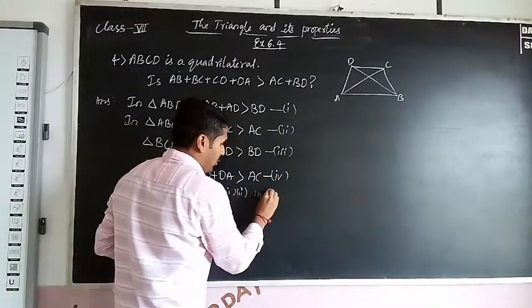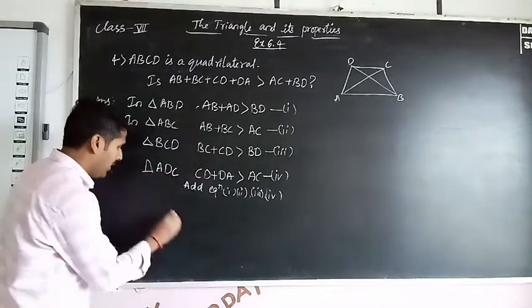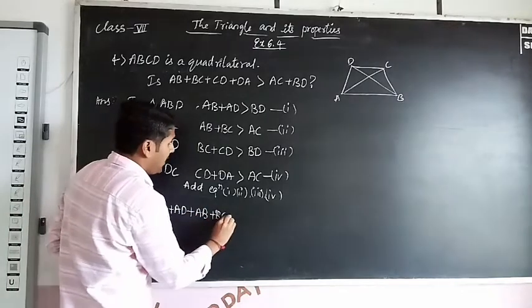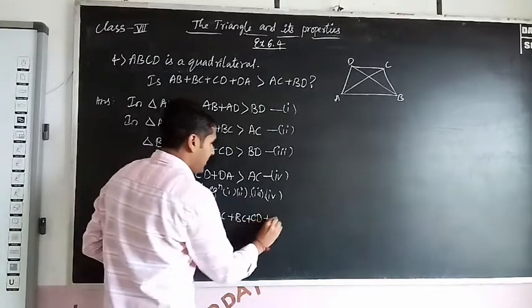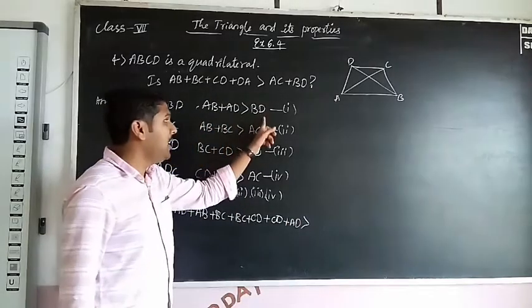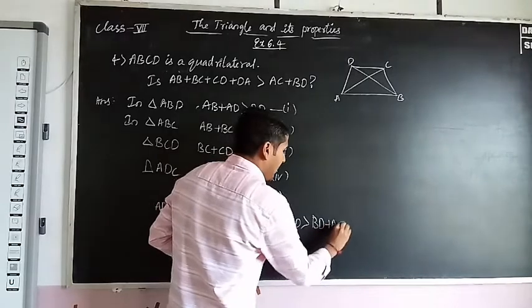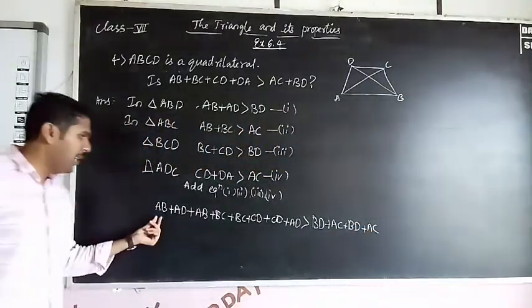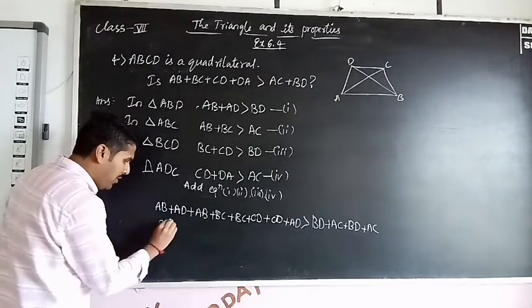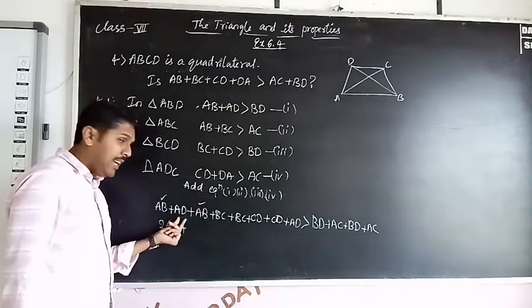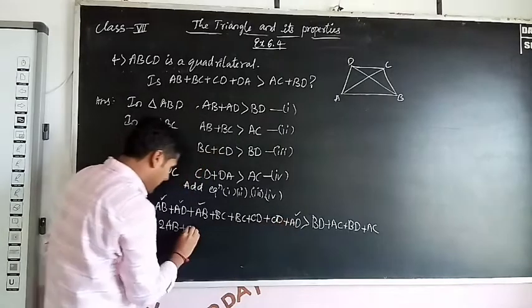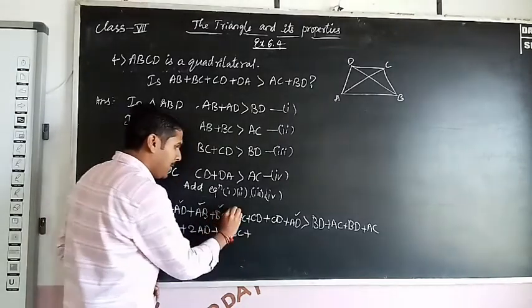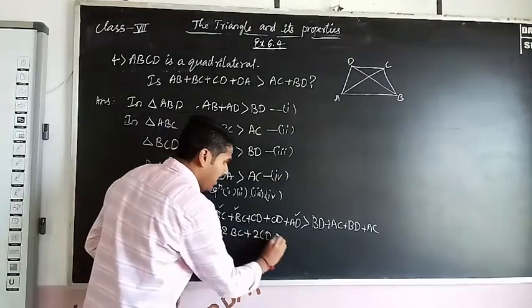Adding, we get AB + AB, next AB + BC, next BC + CD, plus CD + DA plus AC, next BD plus AC. So here AB two times, plus AD two times, plus BC two times, next CD two times, is greater than BD plus BD.